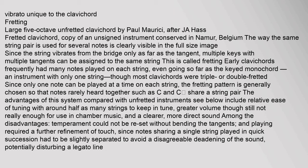Since the string vibrates from the bridge only as far as the tangent, multiple keys with multiple tangents can be assigned to the same string. This is called fretting. Early clavichords frequently had many notes played on each string, even going so far as the keyed monochord — an instrument with only one string — though most clavichords were triple or double fretted. Since only one note can be played at a time on each string, the fretting pattern is generally chosen so that notes rarely heard together, such as C and C sharp, share a string pair.